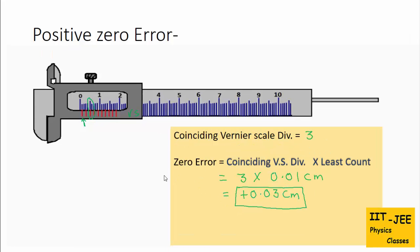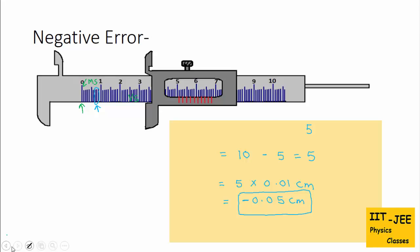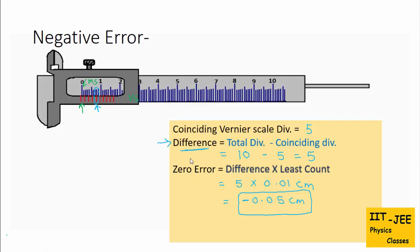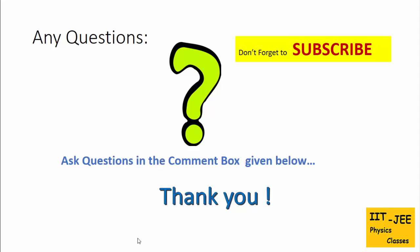Please note: when finding positive zero error, we directly multiply the coinciding vernier scale division by the least count. But when finding negative zero error, we first find the coinciding vernier scale division, then find the difference (total divisions minus coinciding division), and then multiply that difference by the least count — so there is a little difference between the calculations. In the next video we will discuss how to read measurements with the vernier caliper, so stay tuned. Don't forget to subscribe for daily updates, and you can ask questions in the comment box below. Thank you.